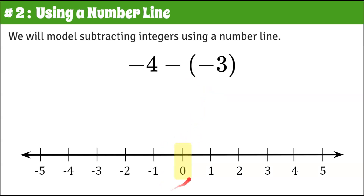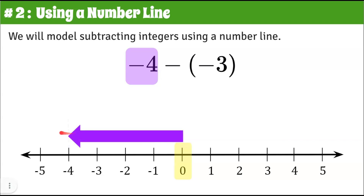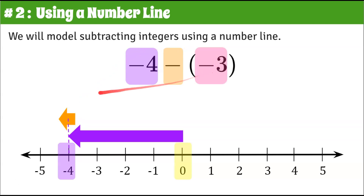We're always going to start at zero when we're on a number line. Our first value is negative four, so we're going to go negative four on our number line — that means we're going to go left. Anytime you see a negative or a subtraction sign, you change direction. So from zero, we head over to negative four. Then we see it says subtract, so we need to be prepared to change direction — prepared to go left. However, our next value, negative three, means change direction again.